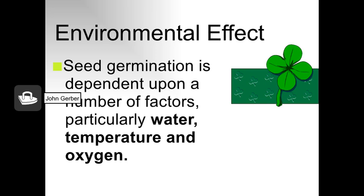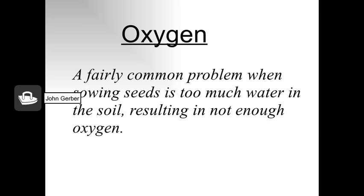Seed germination is dependent on adequate water, the right temperature, and oxygen. Most seeds contain less than 20% water, so they begin to take up water to resume metabolic activity. Enzymes are then activated, which begin digesting the stored food in the cotyledon to feed the plant. Seeds of different species tend to have different germination temperatures, but most vegetables germinate somewhere between 70 and 80 degrees Fahrenheit. If a seedling doesn't have enough oxygen because the soil is too wet, that'll become a problem too.